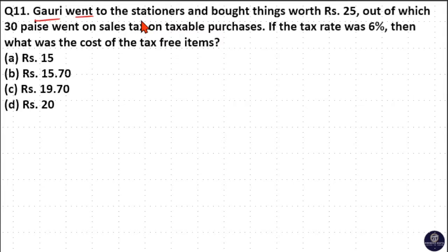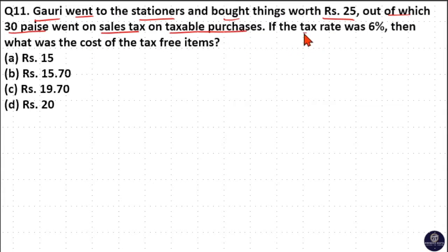Gauri went to the stairs and bought things worth rupees 25, out of which 30 paise went on sales tax on taxable purchases. If the tax rate was 6%, then what was the cost of tax-free items?